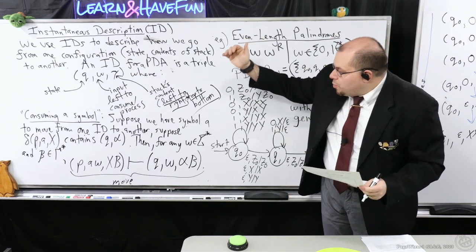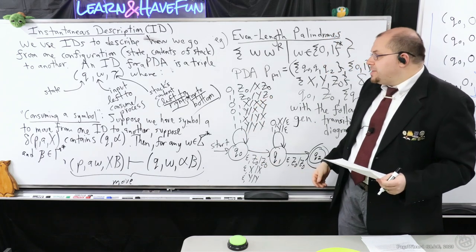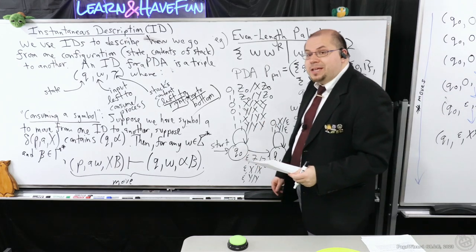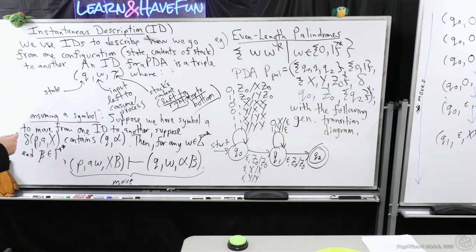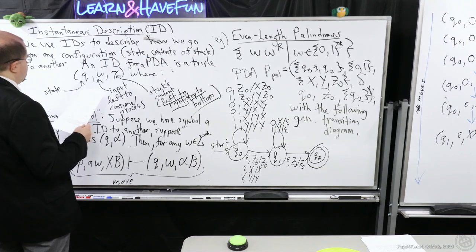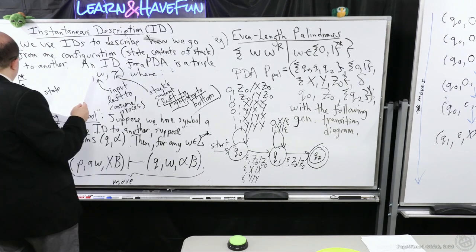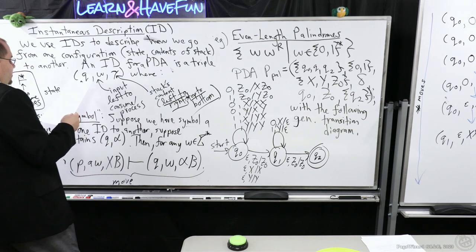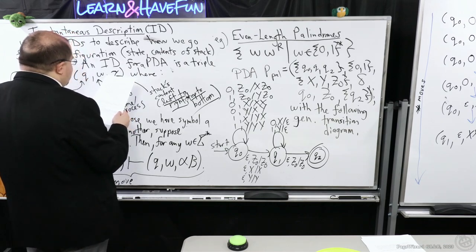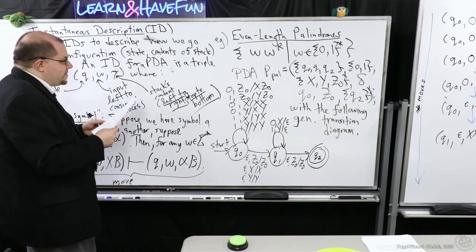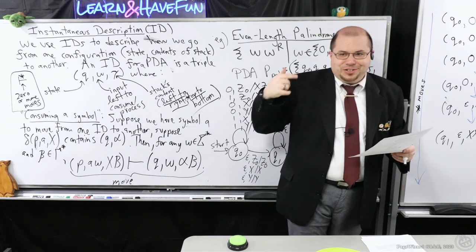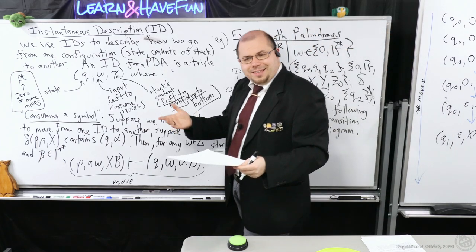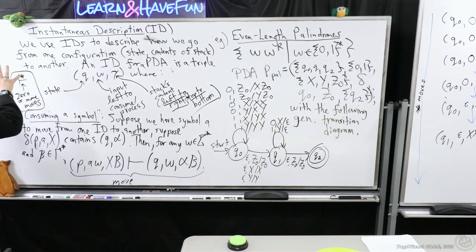If you have several pairs in a set, there are potentially several configurations the PDA will be in simultaneously. We also use the notation ⊢* to mean zero or more moves, similar to our derivation process. We'll need to define this inductively, but first let's consider what an execution of a string looks like for a given PDA.